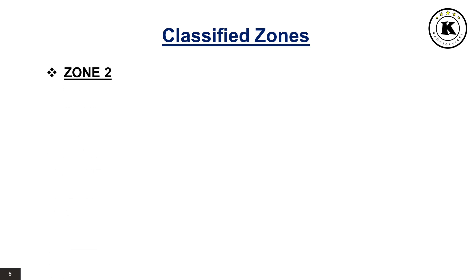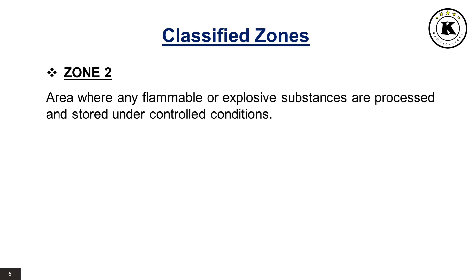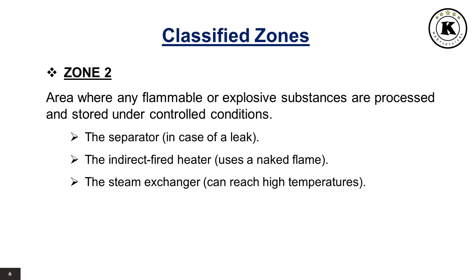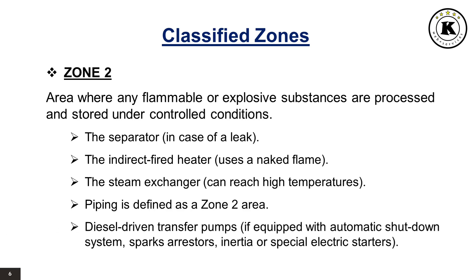Zone 2 is the area where any flammable or explosive substances are processed and stored under controlled conditions. For example, the separator in case of a leak; the indirect fired heater because it uses a naked flame; the steam exchanger because it can reach high temperatures; and piping, which is defined as a Zone 2 area. Diesel-driven transfer pumps are also Zone 2, if equipped with automatic shutdown systems, spark arresters, inertia, or special electric starters.